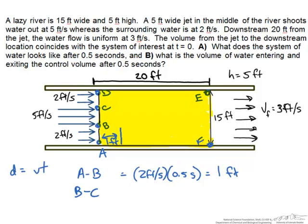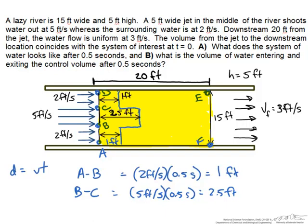For point BC at 5 feet per second we would have 2.5 feet. The other side is symmetrical so that is 1 foot as well. At 0.5 seconds this system has moved downstream. We are looking at the region ABCD.